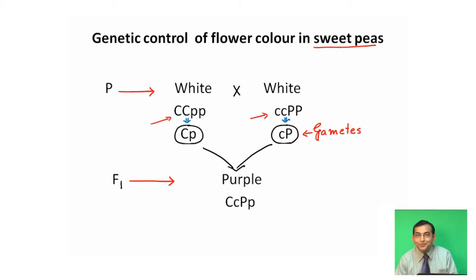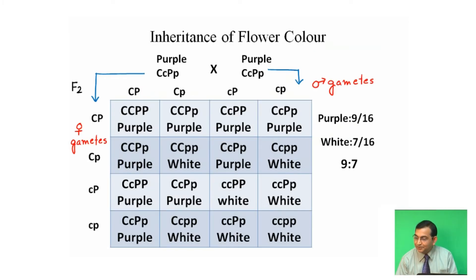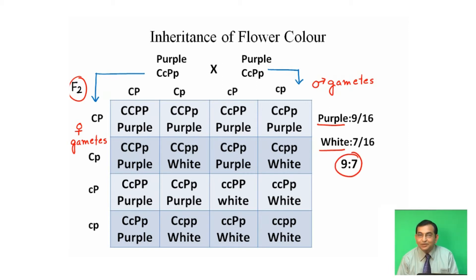When these two purple colored flowers were self-fertilized, in the F2 generation, purple and white colored flowers were obtained in the ratio of 9:7. That is, out of 16, nine purple colored and seven white colored.